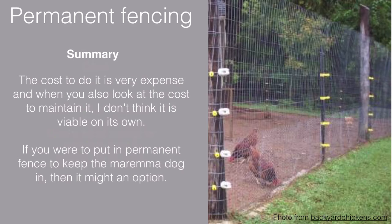Summary: the cost to do it right is very expensive, and when you look at the cost of maintaining it, I don't think it's viable. If you need a permanent fence to keep a Maremma dog in, it might be an option — in that scenario I'd put up dog fence, not chicken wire, to keep the dog in. You might fence off an entire paddock, but inside that paddock I'd still use your portable electric fencing. I hope this has been useful for working out your land area and how to use fencing. That's the end — thank you.